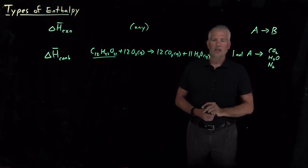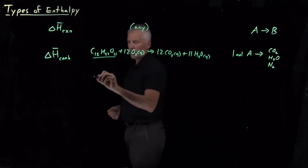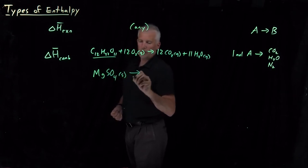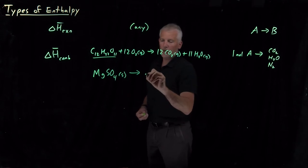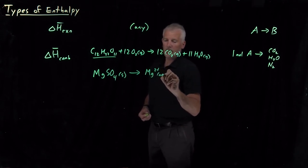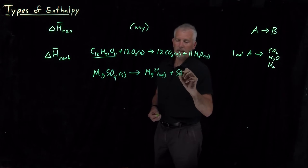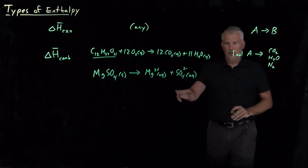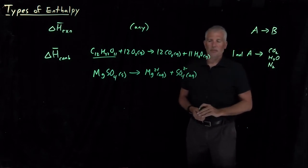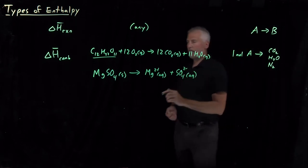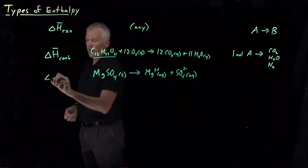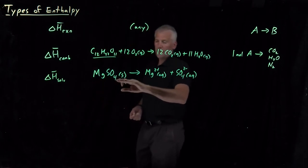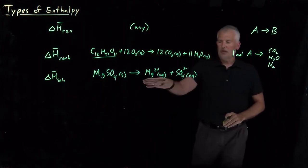We saw another example for the coffee cup calorimeter where we dissolved magnesium sulfate in water to form ionic aqueous magnesium ions and sulfate ions in an aqueous solution. If we wanted to give it a name, we could call it delta H of reaction. We could call it a delta H of solvation because we've taken this reactant and we've solvated it, we've dissolved it in some solvent.